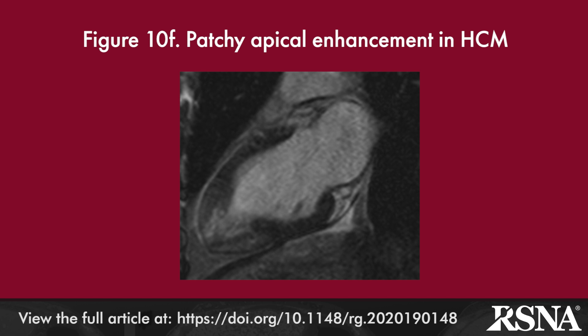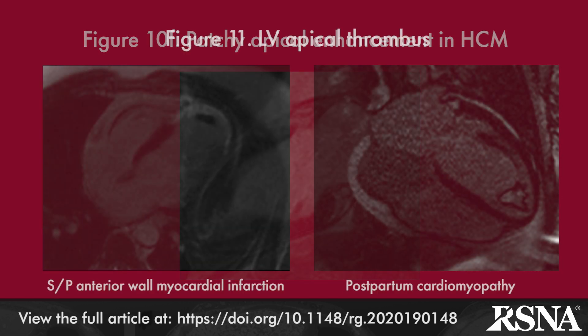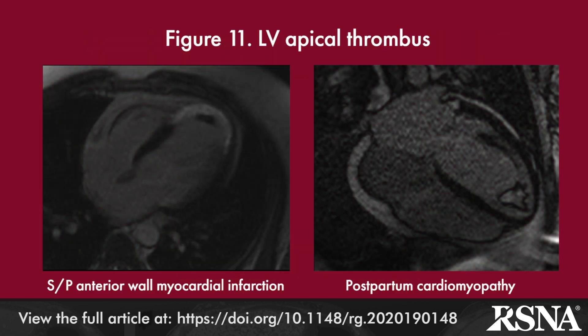Apical thrombus due to ischemic heart disease, as may be seen after an infarct, and thrombus complicating non-ischemic cardiomyopathy, are distinguished from EMF by history and by the type and distribution of delayed enhancement.